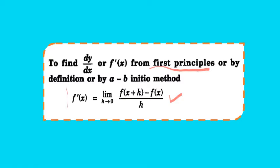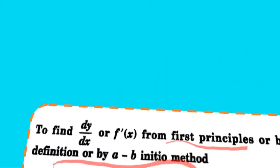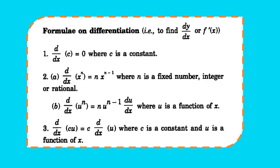We are going to use this formula to find the differentiation of a few functions. Pause and note this down. Some standard formulas: differentiation of a constant is 0; differentiation of x^n where n is a rational number is nx^(n-1); differentiation of u^n where u is a function of x is n·u^(n-1)·du/dx; differentiation of c·u where c is a constant is c times the differentiation of u.